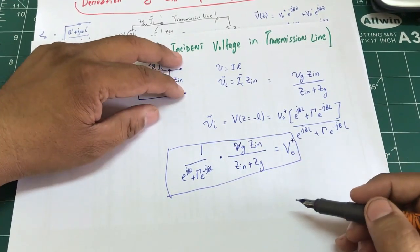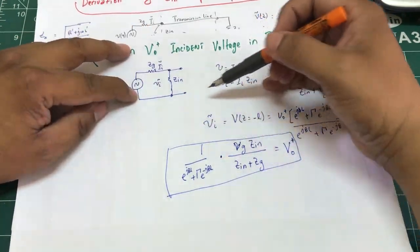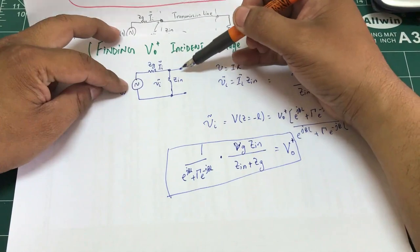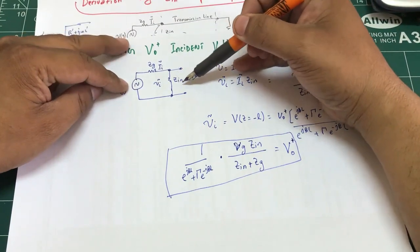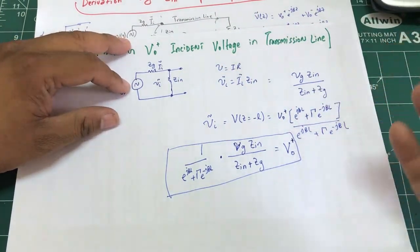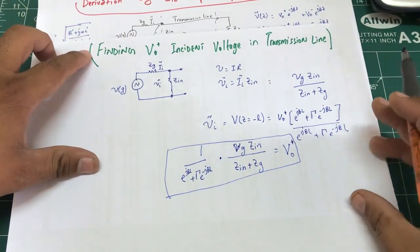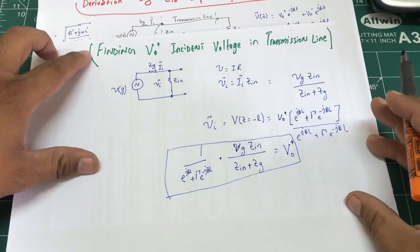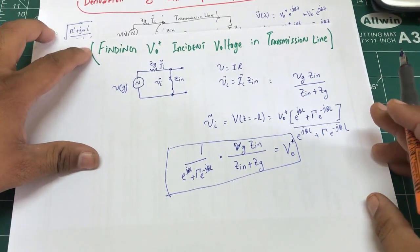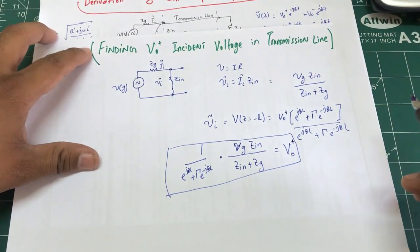This is how much voltage is going into the transmission line in the presence of the input impedance. I hope you liked this tutorial. If you have any questions, leave them in the comments, and don't forget to subscribe to the channel.